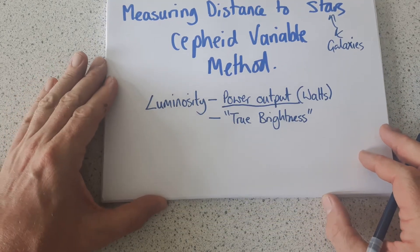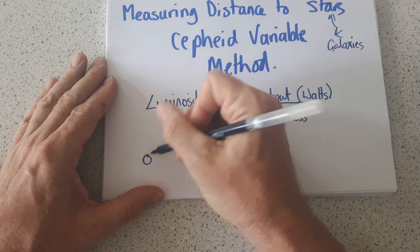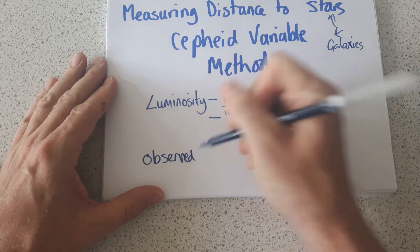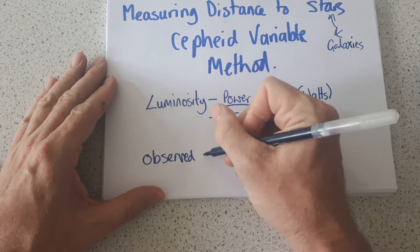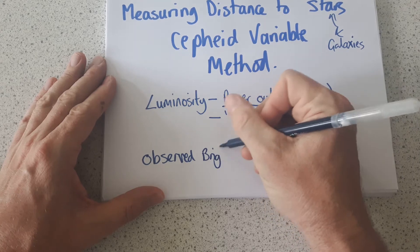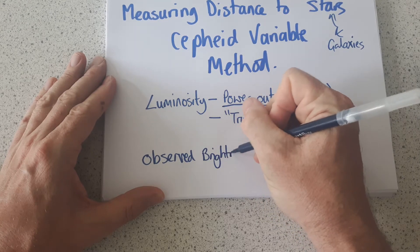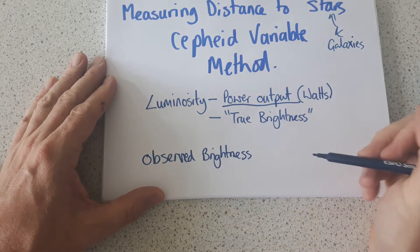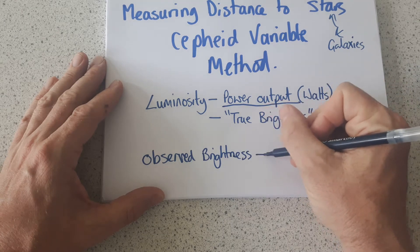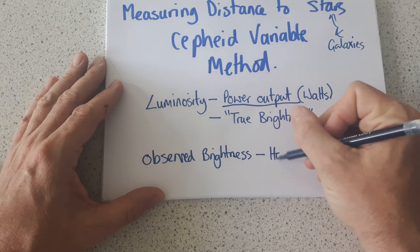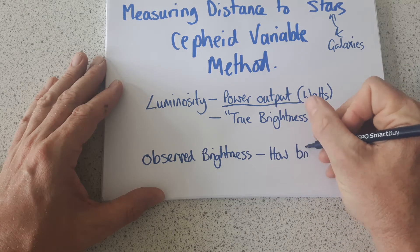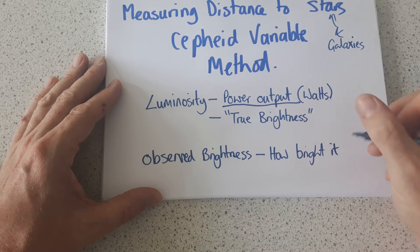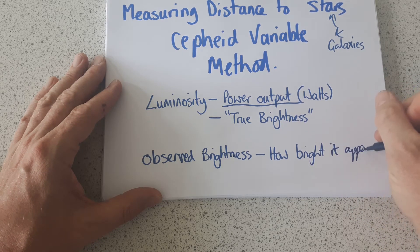Alongside the luminosity, we have the observed brightness of a star. When you look at a star in the night sky, you can observe how bright it appears to be from Earth — so it's how bright it appears from Earth.